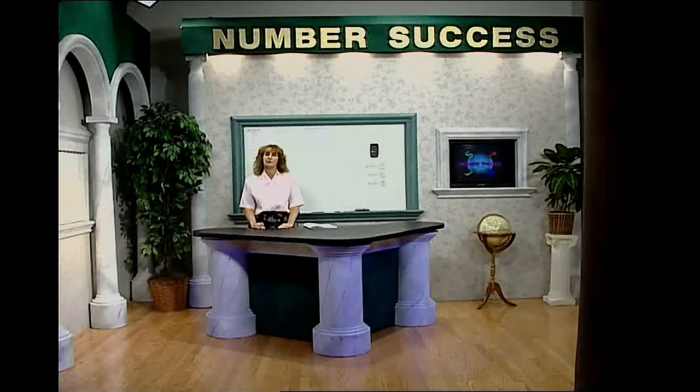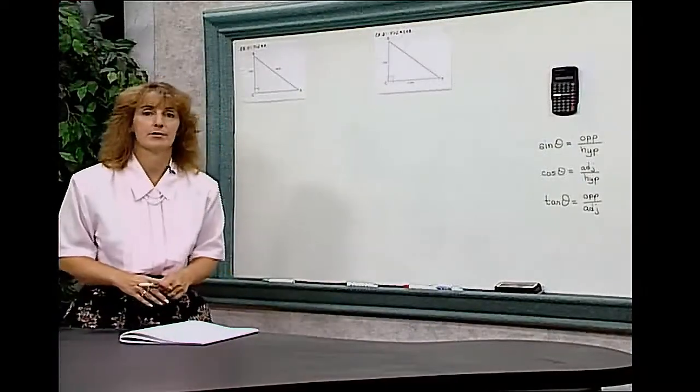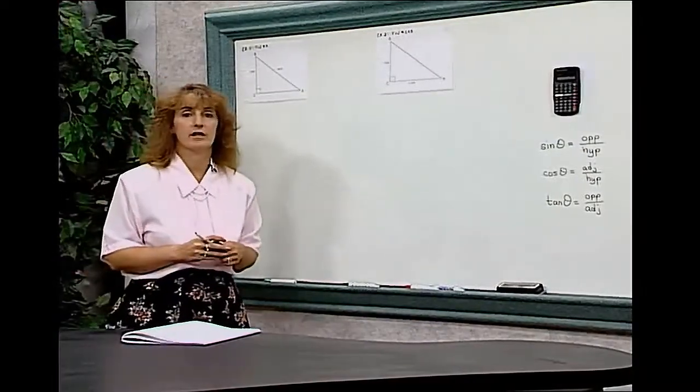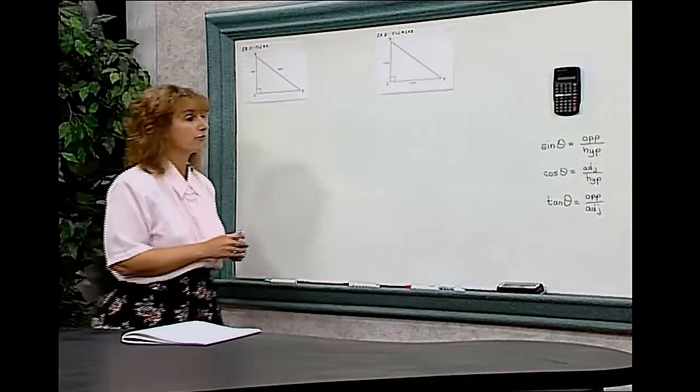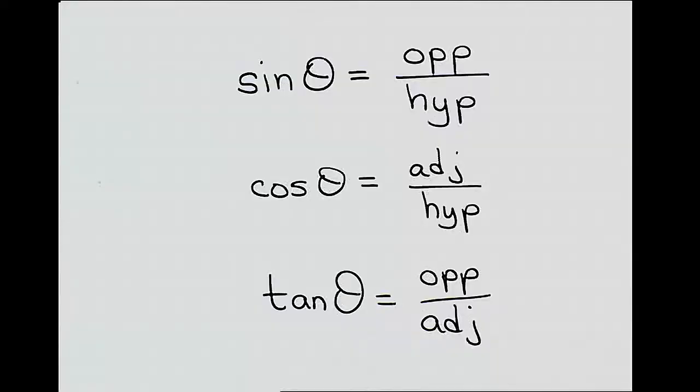Using a calculator to find unknown angles. Let's look at some examples of what we can do to find unknown angles. We already know that we have three basic trig ratios: sine theta equals opposite over hypotenuse, cosine theta equals adjacent over hypotenuse, and tangent theta equals opposite over adjacent.